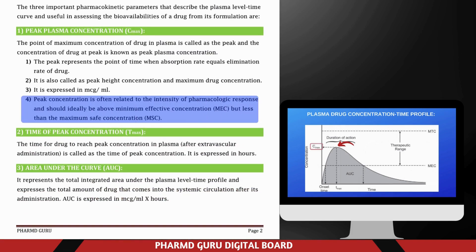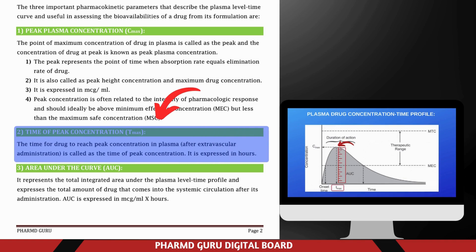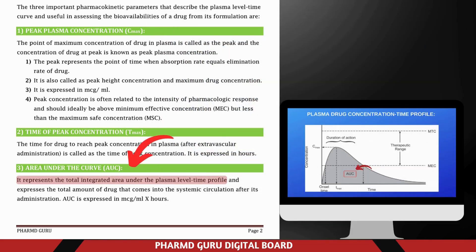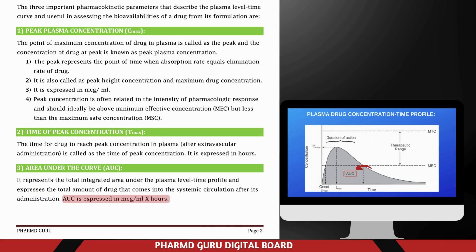The concentration of the drug at C-max is typically measured in micrograms per milliliter (mcg/mL). For the drug to be effective, C-max should be above the minimum effective concentration (MEC) but below the maximum safe concentration (MSC) to avoid toxicity. T-max refers to the time it takes for a drug to reach its peak concentration in the bloodstream after extravascular administration. AUC is the total area under the plasma concentration-time curve, representing the total amount of drug that enters the bloodstream, typically expressed in mcg/mL × hours.